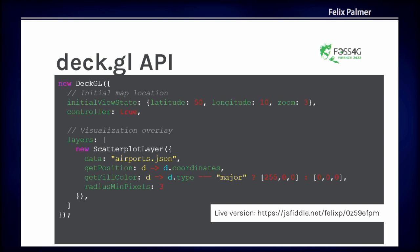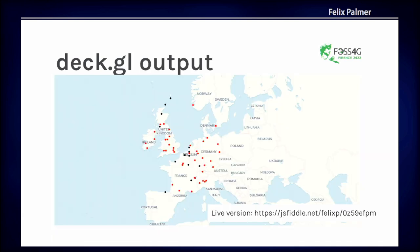The core part is this collection of layers. What's quite different from other visualization libraries are these two functions called accessors. This is how deck.gl is informed how you'd like to map your data to the visualization. The function getPosition is called automatically by deck.gl on every object in your data array, pulling out the position to place it on the map. Similarly, getFillColor looks at the type: if it's a major airport it colors it red; otherwise black. That's the result — a map with some colored points on it.